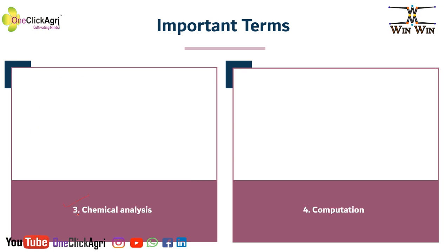The next is Chemical Analysis. On the basis of chemical analysis, we can analyze the maturity indices of fruits as well as vegetables. In that, first is TSS; second, acids present in the fruits; third, starch; and last, sugar present in the fruits.